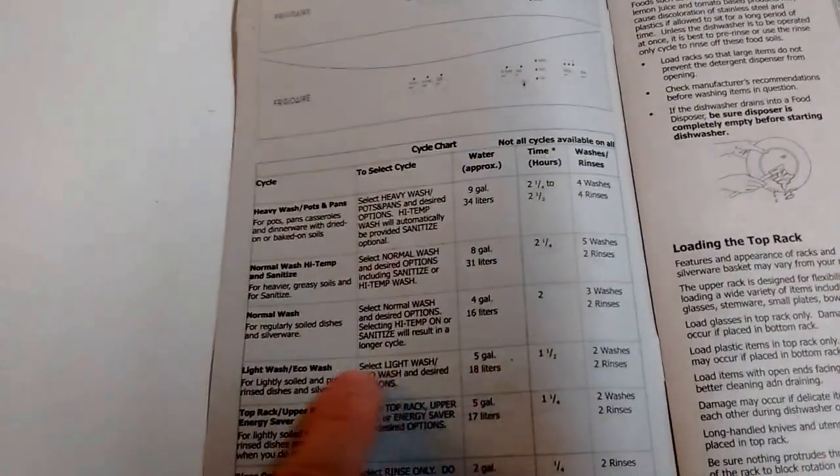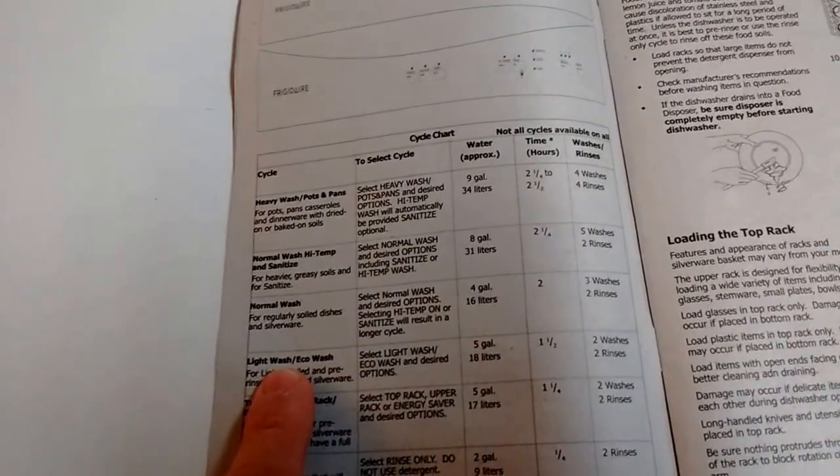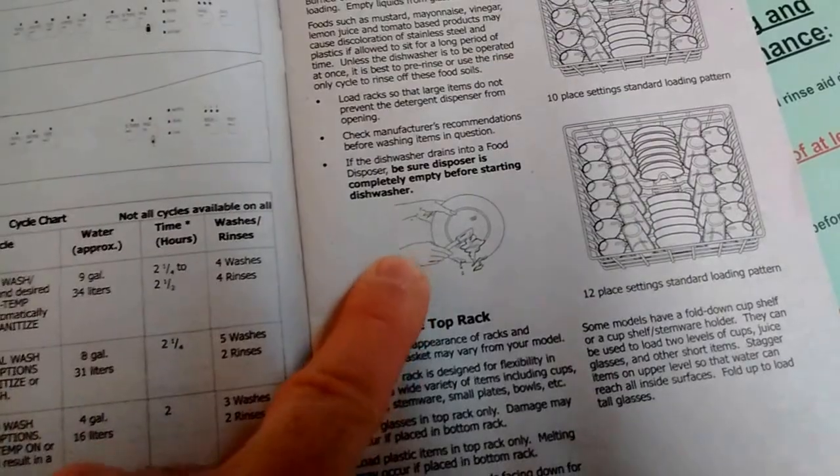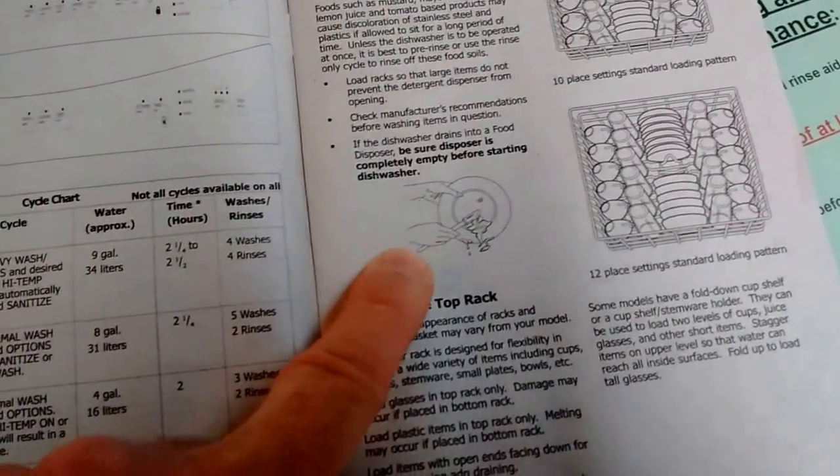In order to make the best use of your light wash mode, make sure you're pre-rinsing your dishes by scraping off any excess food prior to loading it in.